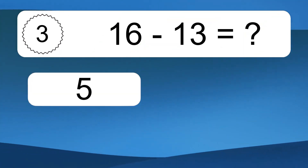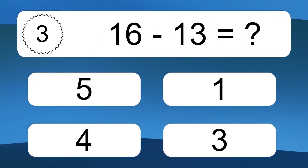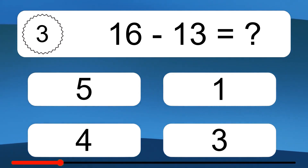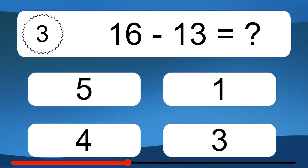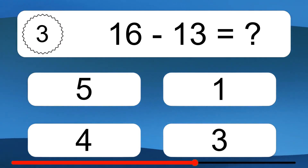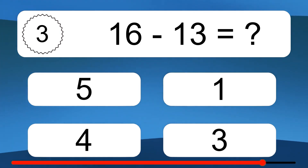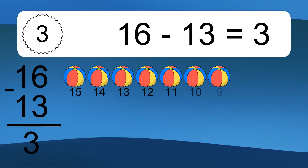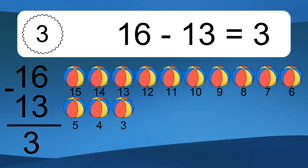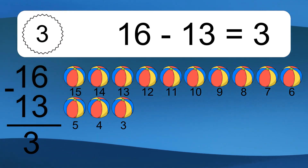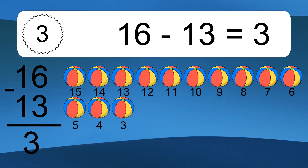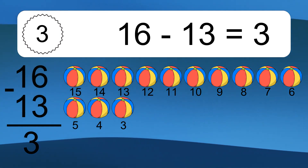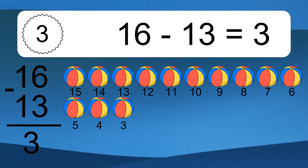16 minus 13 equals what? 16 minus 13 equals 3. Let's count it: 15, 14, 13, 12, 11, 10, 9, 8, 7, 6, 5, 4, 3.